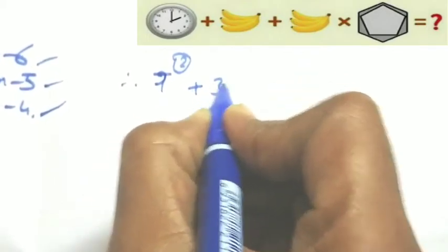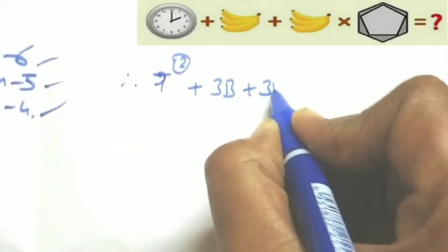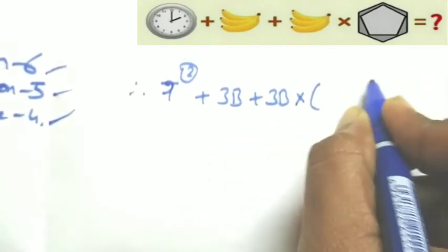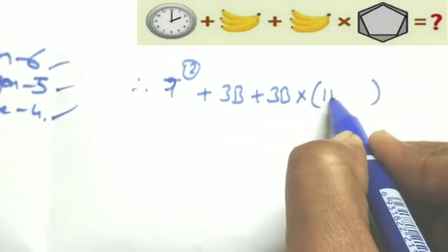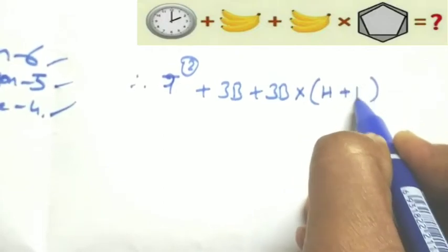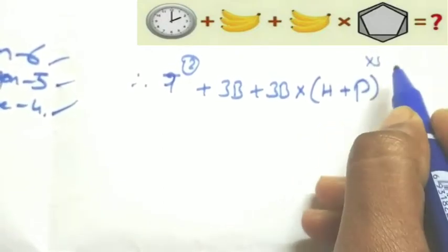So 2 plus 3 bananas plus 3 bananas times... observe the polygon having only hexagon and pentagon - square is not there in that.